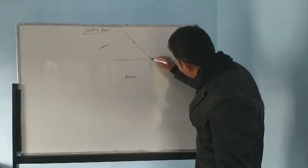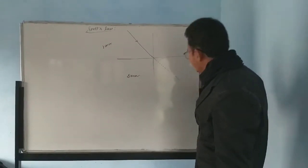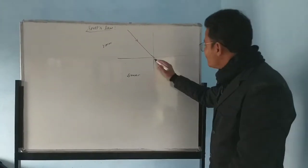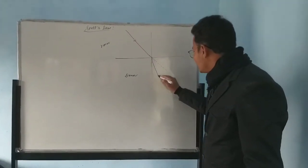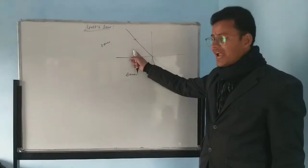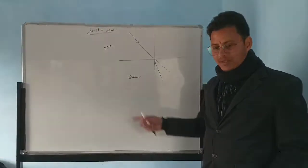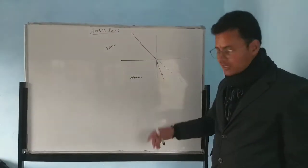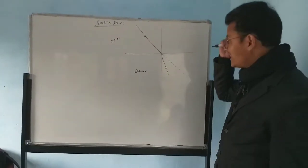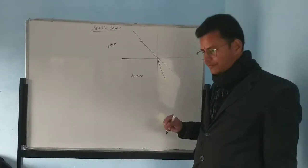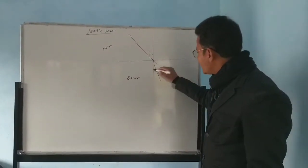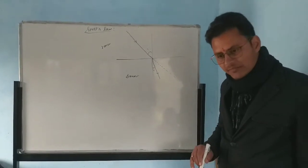So the original path of light is this, but after refraction it bends towards the normal. Now why is it bending? Because the speed of light in the rarer medium is faster, and in the denser medium it gets lower. This angle is known as the angle of incidence, and this angle is known as the angle of refraction.